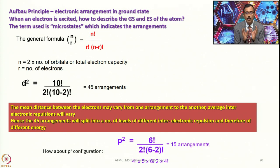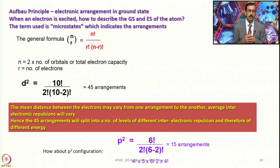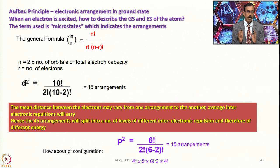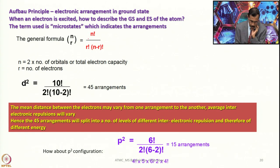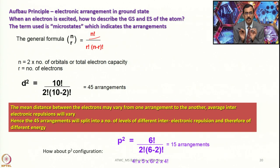The term 'microstates' indicates all possible arrangements when we excite electrons — all possible excited states starting from the ground state, which need not follow Hund's rule or Aufbau principle. The general formula for finding out microstates is n! / (r! × (n−r)!), where n is the total electron capacity (twice the number of orbitals) and r is the number of electrons.